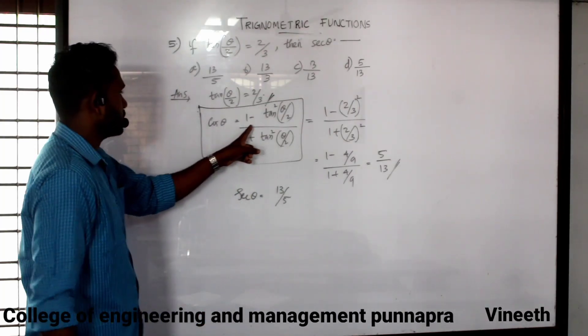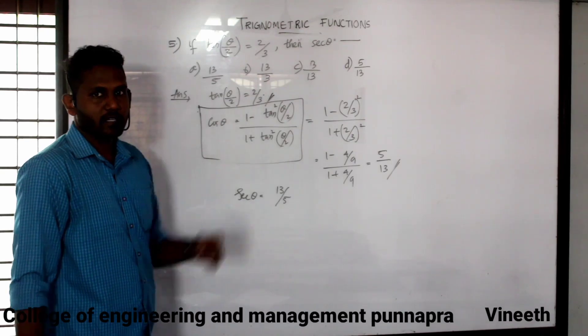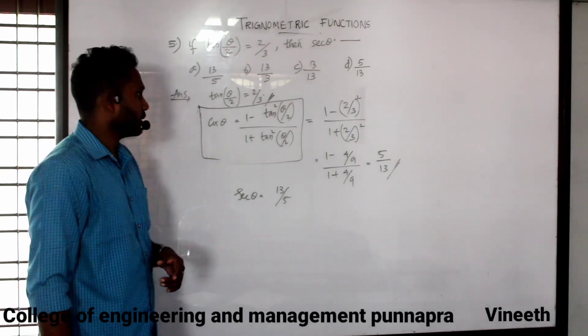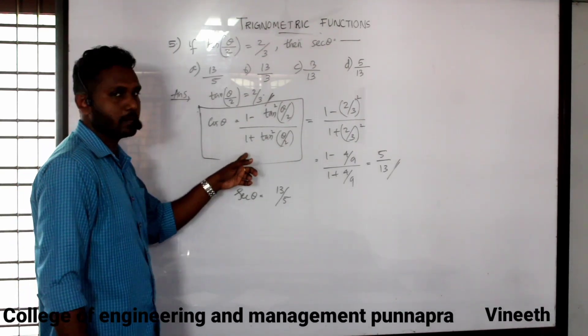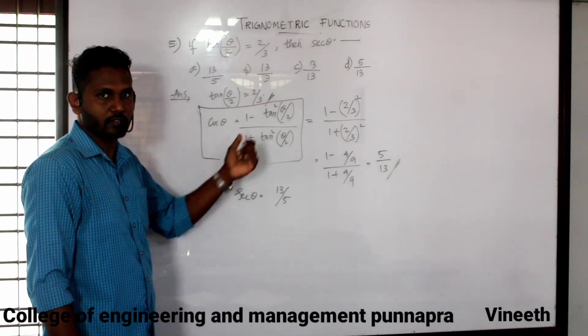Cos theta is equal to 1 minus tan squared(θ/2) over 1 plus tan squared(θ/2), where tan(θ/2) equals 2 by 3.